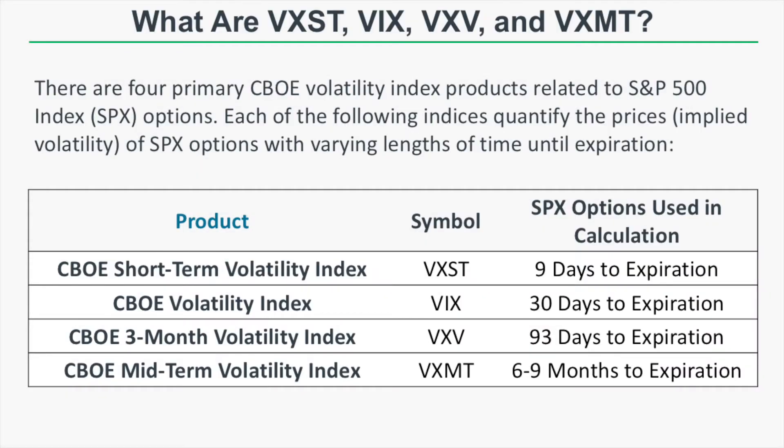So what are VXST, VIX, VXV, and VXMT? There are four primary Chicago Board Option Exchange volatility index products related to S&P 500 index options. The S&P 500 index has the ticker SPX. Each of the following indices quantifies the option prices, or implied volatility, of SPX options with varying lengths of time until expiration.